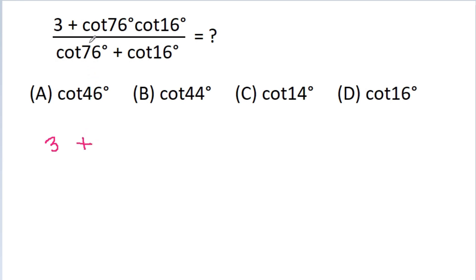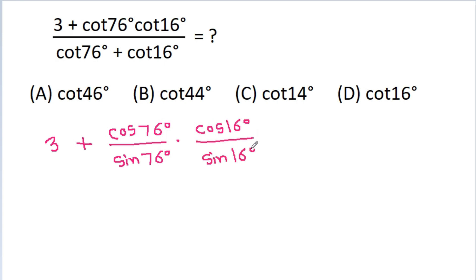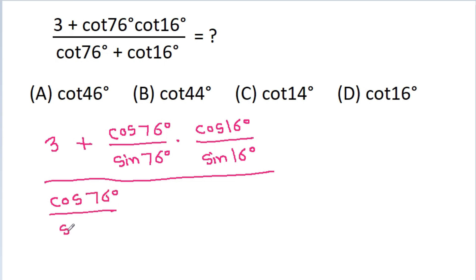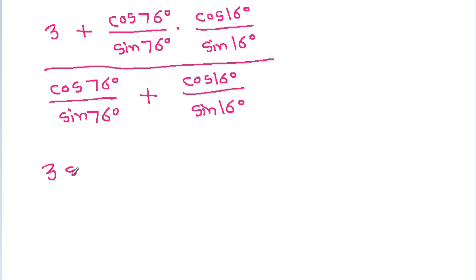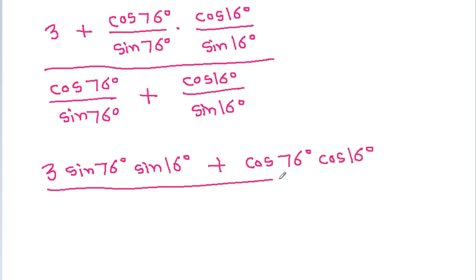We have 3 plus, and cot 76 degree is cos 76 degree by sin 76 degree, times cot 16 degree is cos 16 degree by sin 16 degree, by cot 76 degree which is cos 76 degree by sin 76 degree plus cot 16 degree which is cos 16 degree by sin 16 degree. And it is sin 76 degree sin 16 degree plus cos 76 degree cos 16 degree by sin 76 degree sin 16 degree.